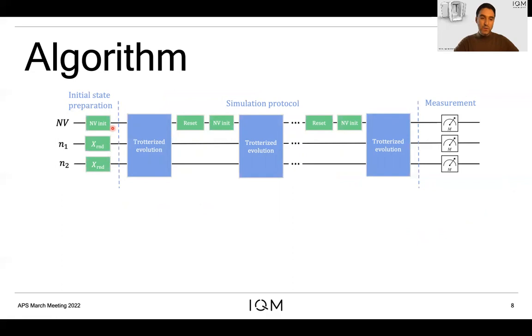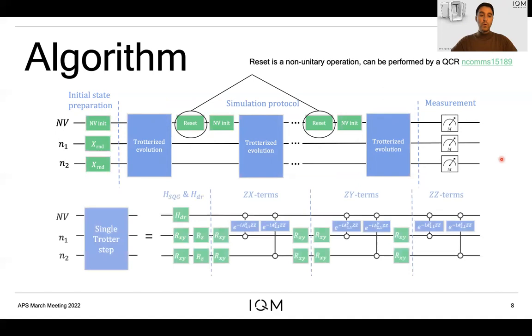Then the algorithm would go as follows. One would initialize the qubits in a certain state with single qubit rotations and then one would apply a block of Trotterized evolution representing the free evolution under the microwave drive, and then if several cycles are necessary one could reset and reinitialize the state of the qubit representing the NV center and repeat the process. It is worth noting here that the reset is a non-unitary operation that we at IQM perform with a quantum circuit refrigerator.